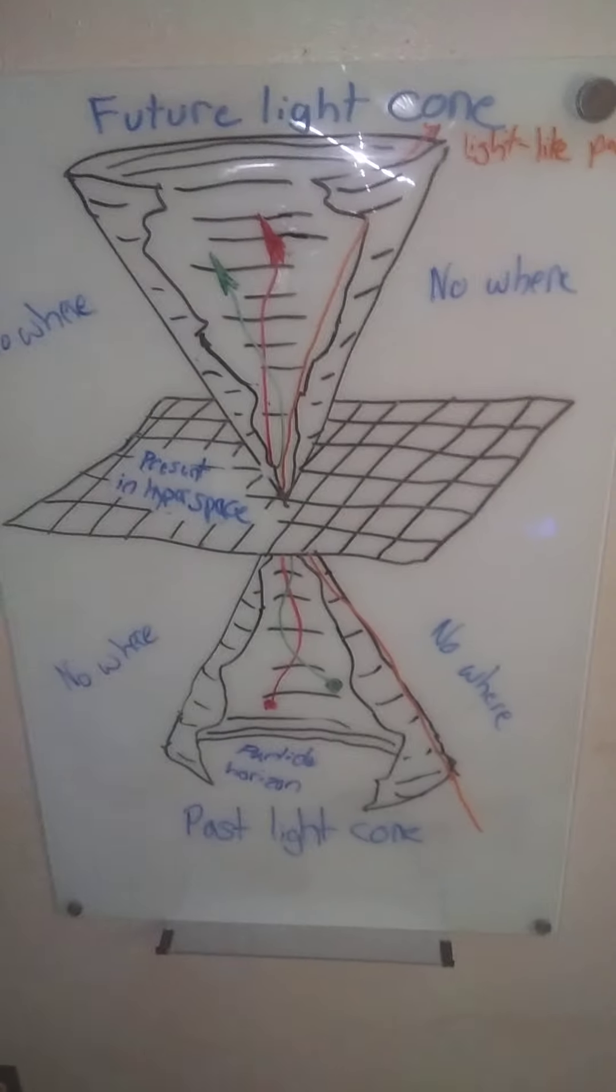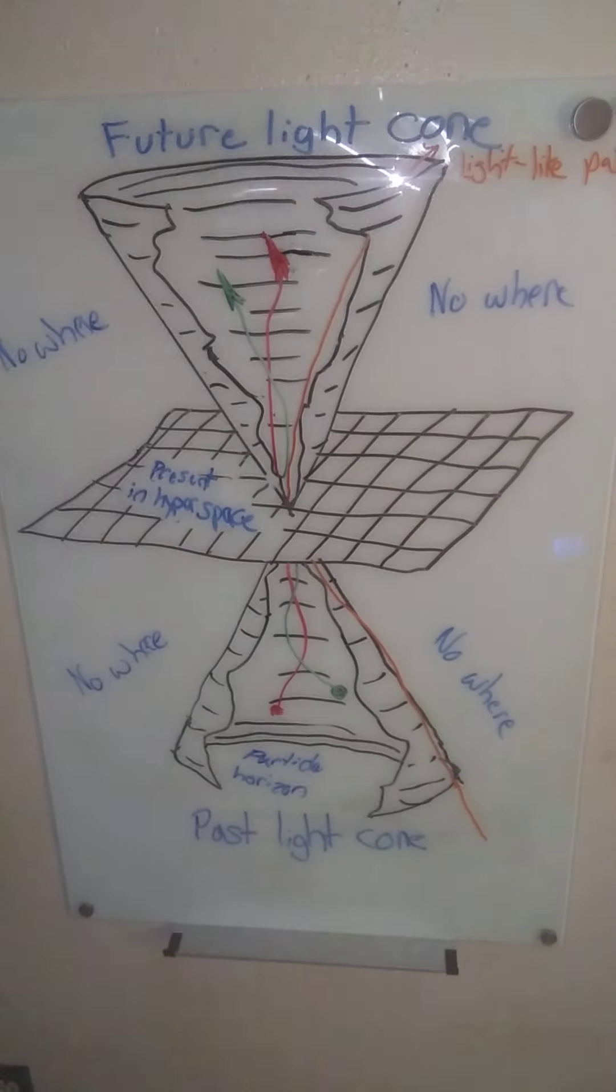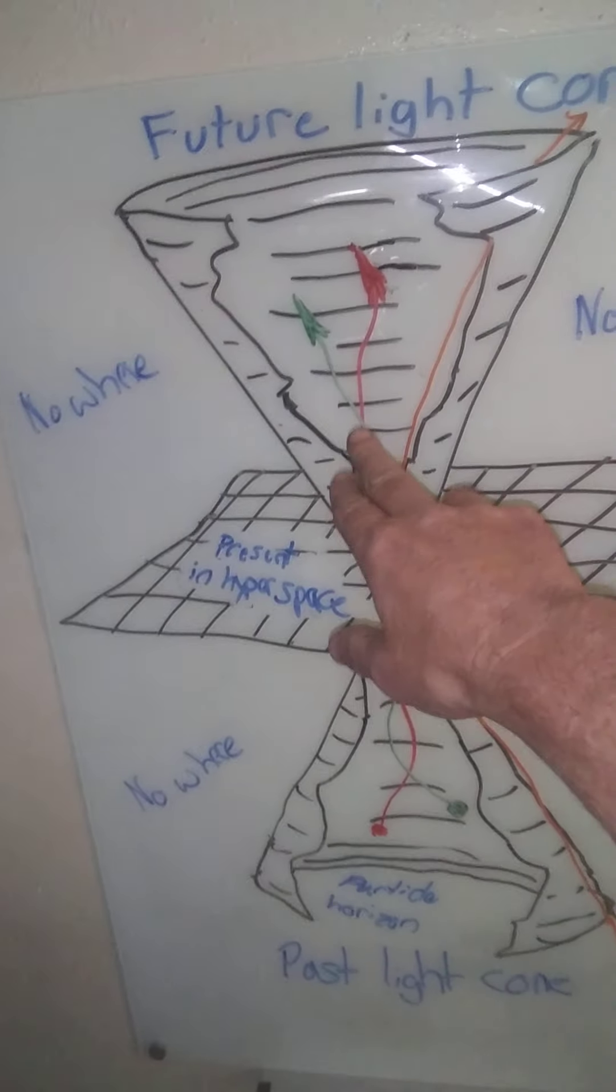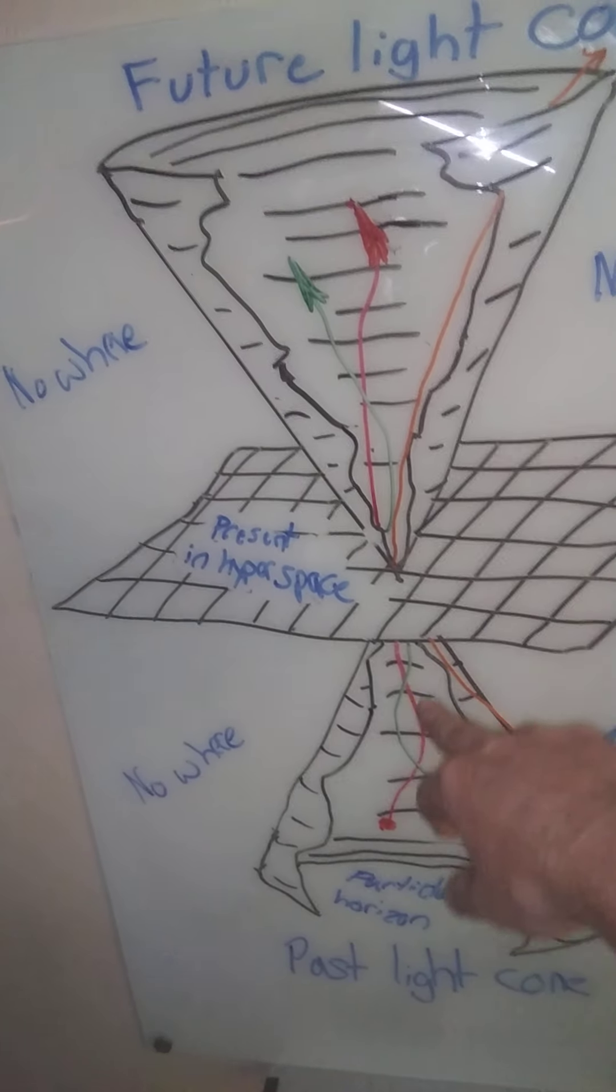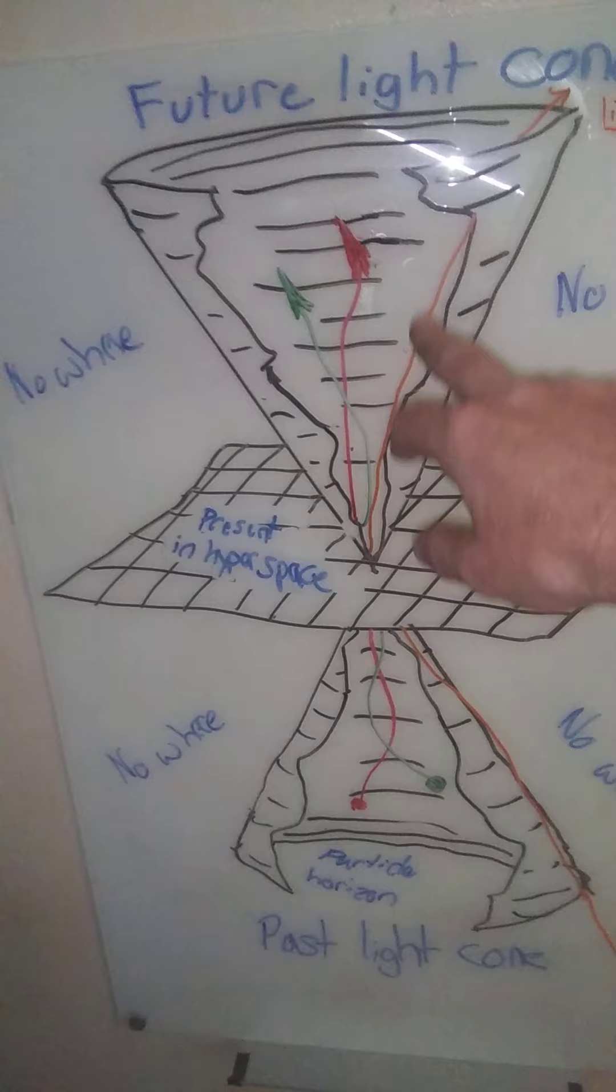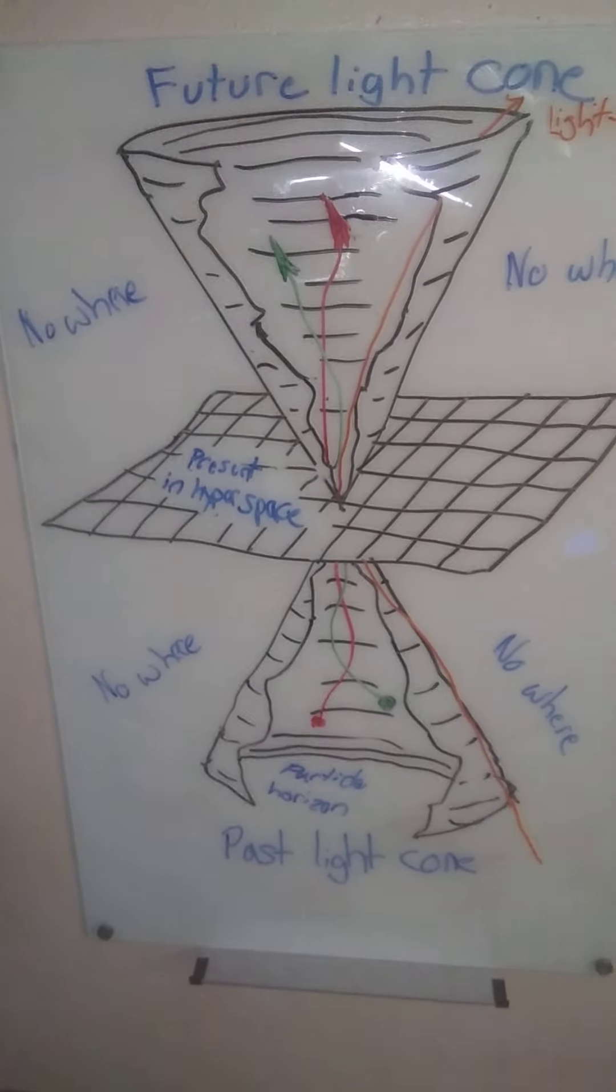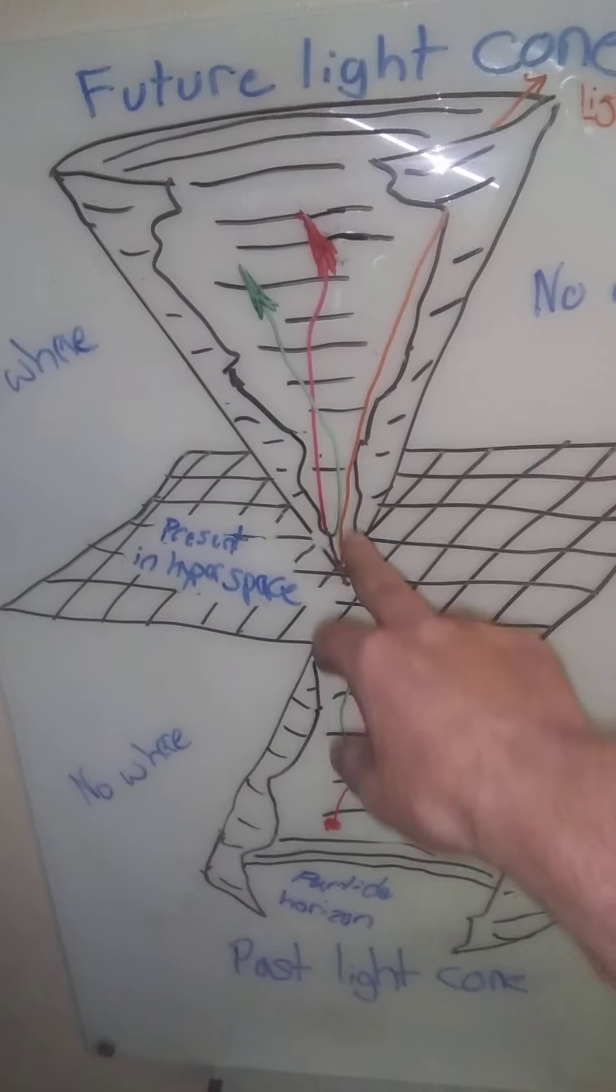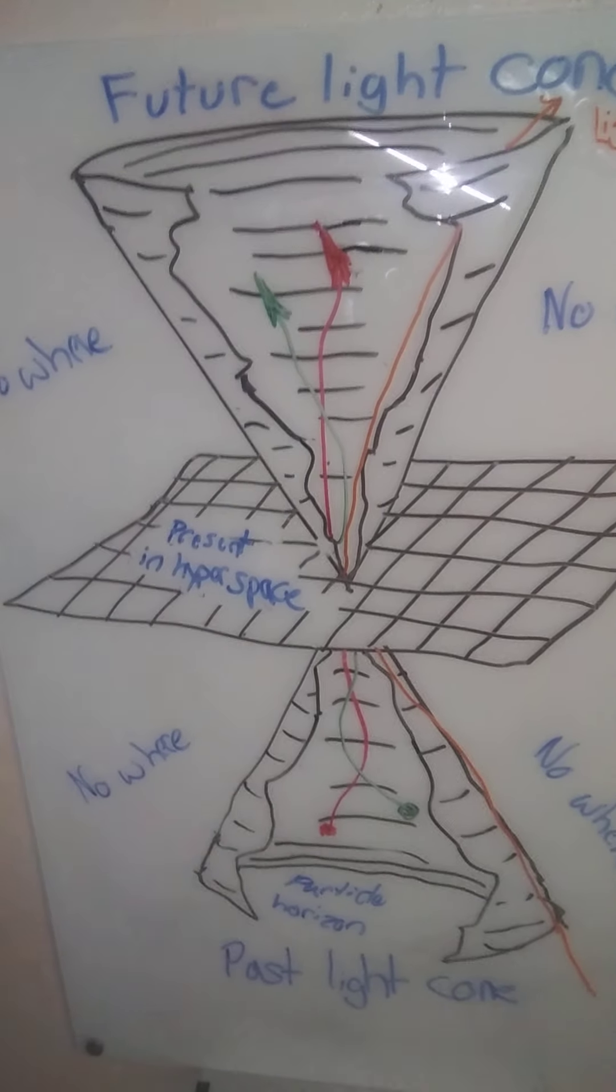Okay, my name is Keith. My conjecture is that no two world-lines can intersect in space-time, in the light cone, and in the past, present, or future. No two world lines can intersect.